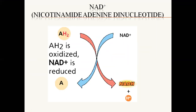NAD is nicotinamide adenine dinucleotide. In a series of reactions where electrons are released — the oxidation of hydrogen, the dehydrogenation process — that hydrogen will be taken up by NAD. NAD, which is a carrier, will carry hydrogen. Then NAD is oxidized and hydrogen is removed from it. The complex molecule is going to become simpler.